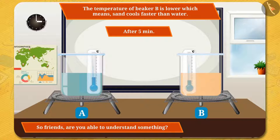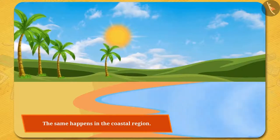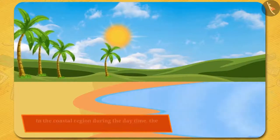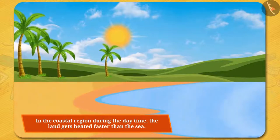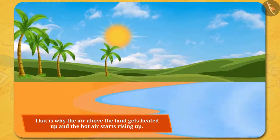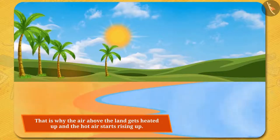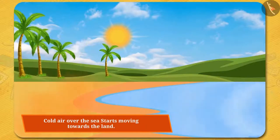So friends, sand heats and cools down faster than water. The same happens in the coastal region. During the daytime, the land gets heated faster than the sea. That is why the air above the land gets heated up and the hot air starts rising up, and the cold air over the sea starts moving towards the land.